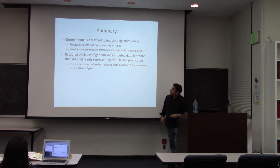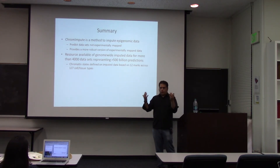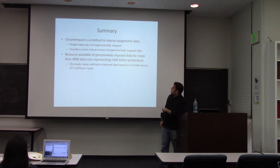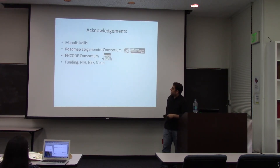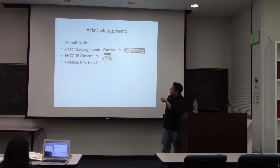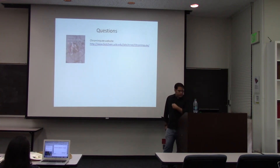In summary, I presented ChromeImpute — a method to impute epigenetic data genome-wide. It can predict data sets which haven't been mapped experimentally, and potentially provide a more robust version of data sets even when they have been experimentally mapped. It's available as a resource of more than 4,000 data sets with over 500 billion predictions made, and chromatin states are defined on those as well. This work started at the end of my post-doc and continued at UCLA, done in the context of the Roadmap Epigenomics Consortium with data also from the ENCODE project.